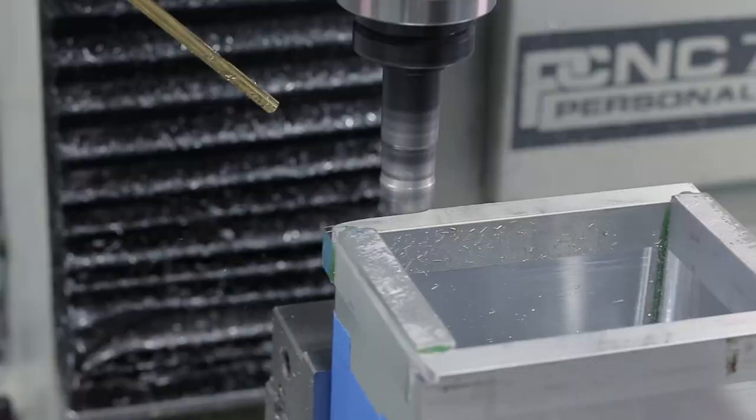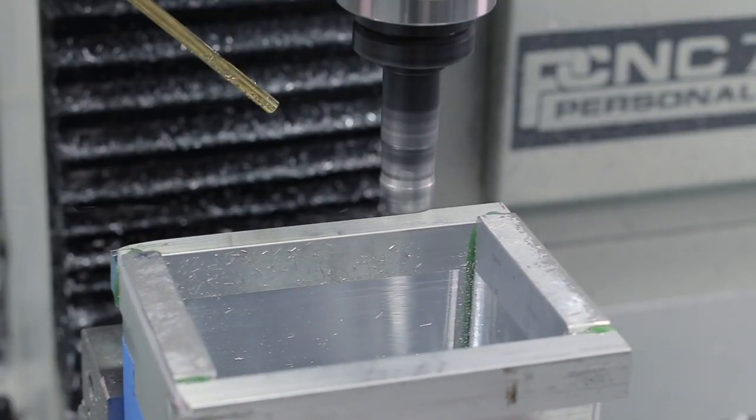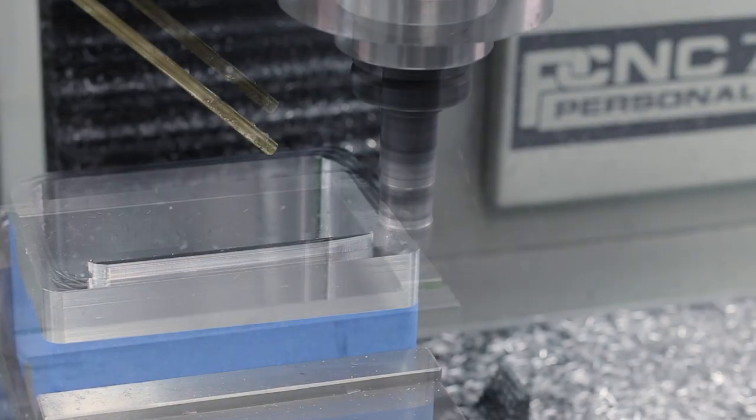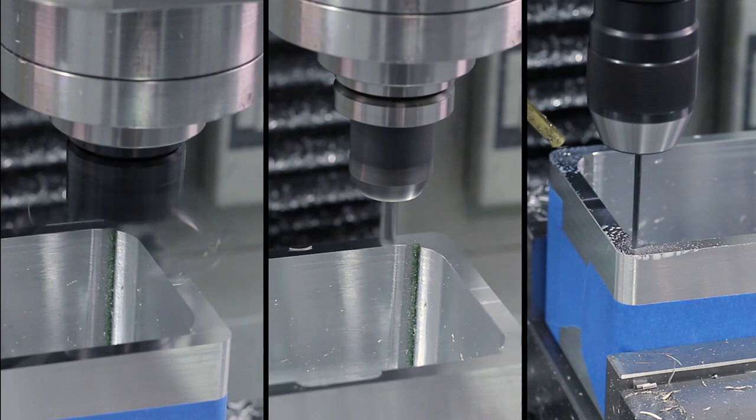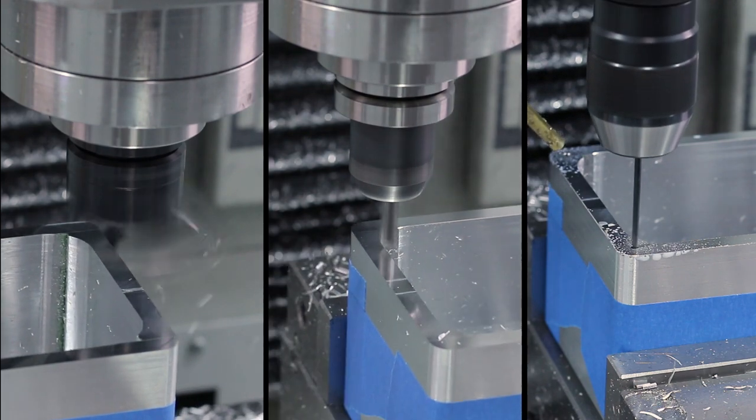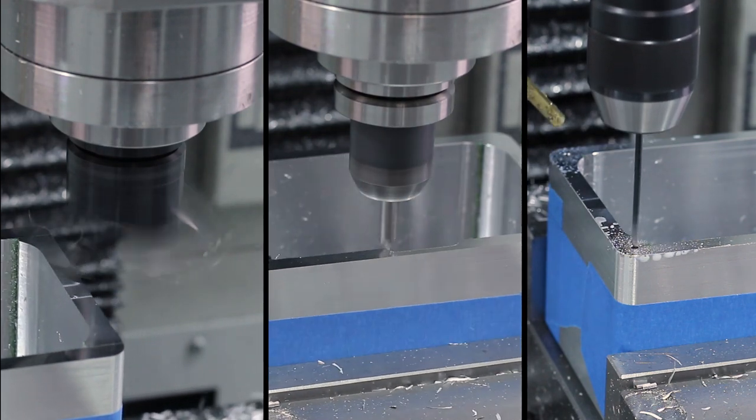We're basically done. Flip our part over. We've just got to deck off the back side of that, including the part of the stock that we were using when we were holding the part in the vise. Clean up the face, add some chamfers, drill a few holes, and we've got our custom-sized additive subtractive hybrid manufacturing enclosure.